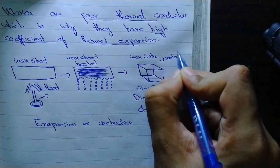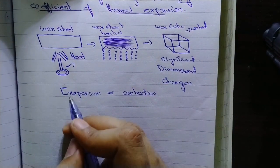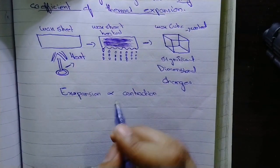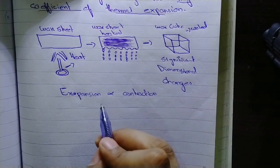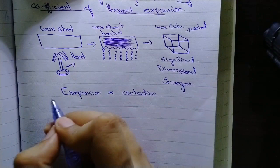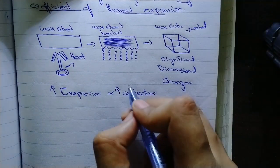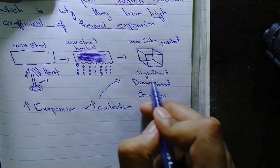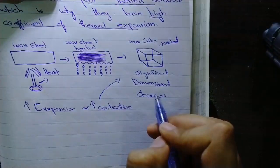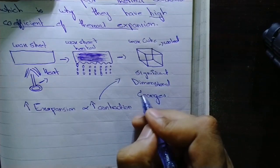So as we know that the more the material expands, the more it contracts, because these two properties are interrelated. That is why when material expands more, it will contract more, and because of this what happens is there can be significant dimensional changes before and after heating of the wax pattern.